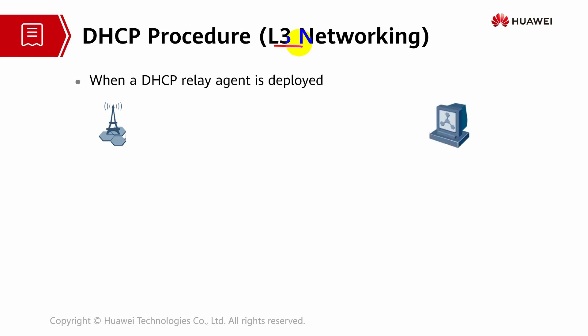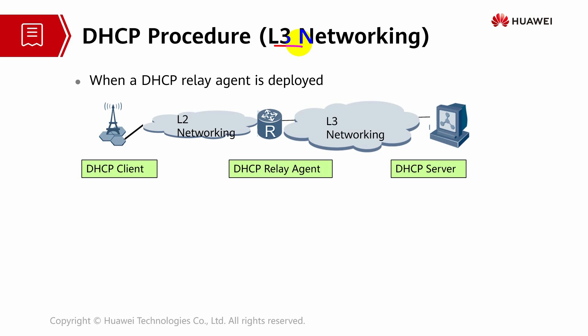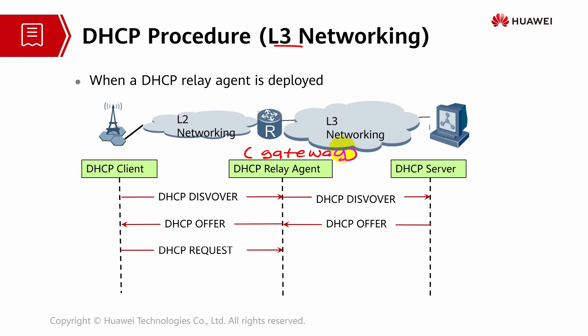The difference from the previous scenario is that we still have the client and we still have the server, but the problem is that they cannot communicate directly with each other. In order to make them communicate we need a gateway, which is basically the relay agent. The relay agent acts as a mediator between them and will start in the broadcast domain of the client to facilitate communication with the server.